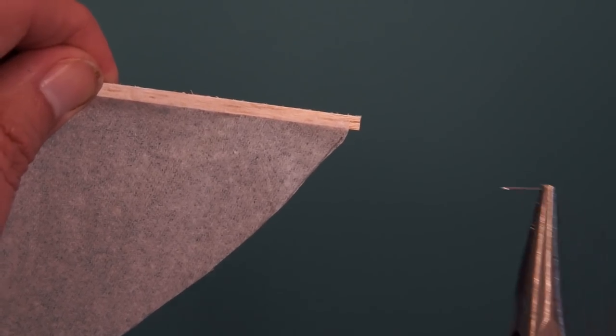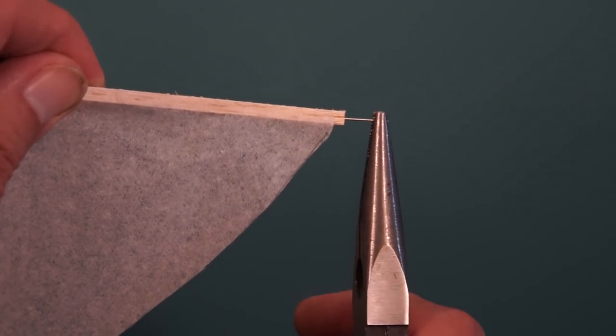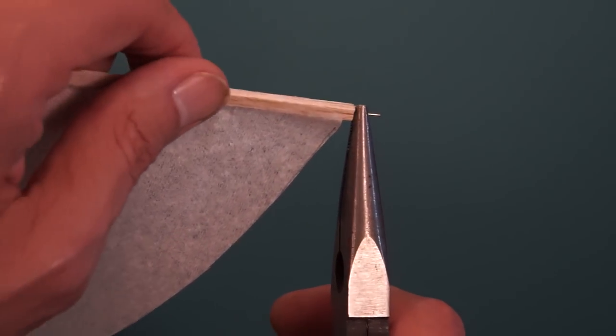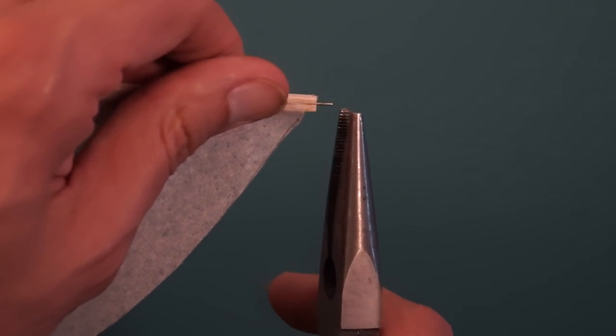If the ornithopter only wants to fly in a tight circle then it won't be able to gain any altitude. The way you fix this is you add a little bit of weight to one of the wing tips by inserting a piece of sharp wire into the wood.